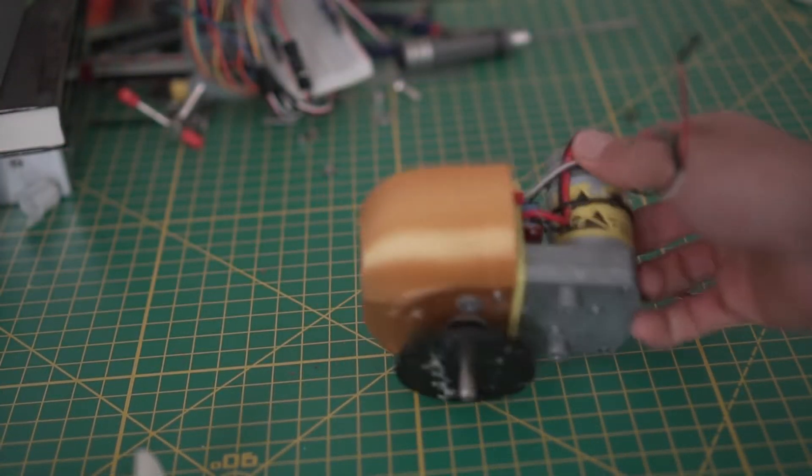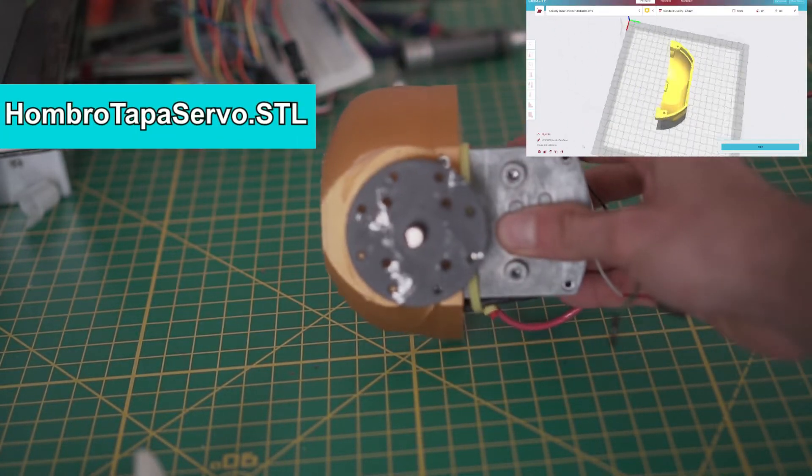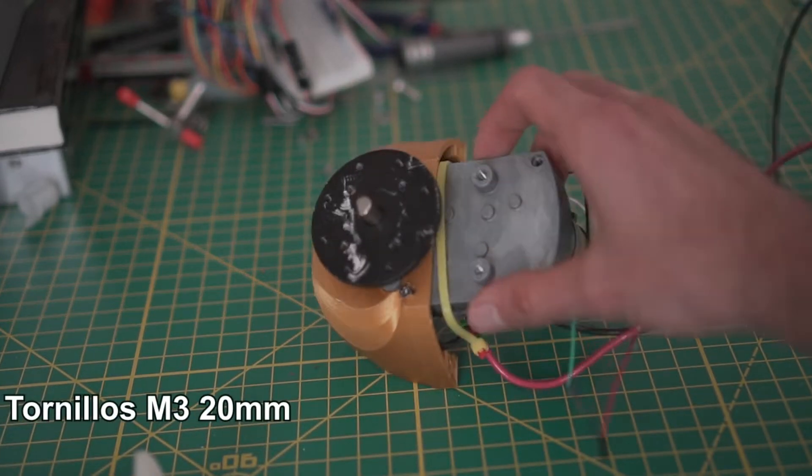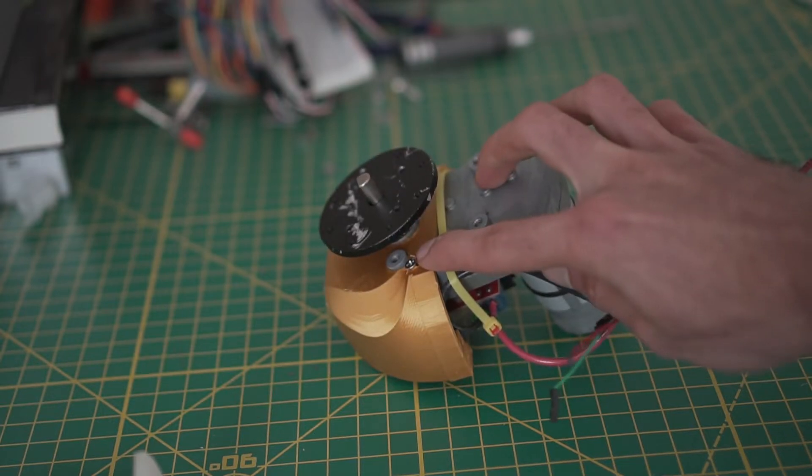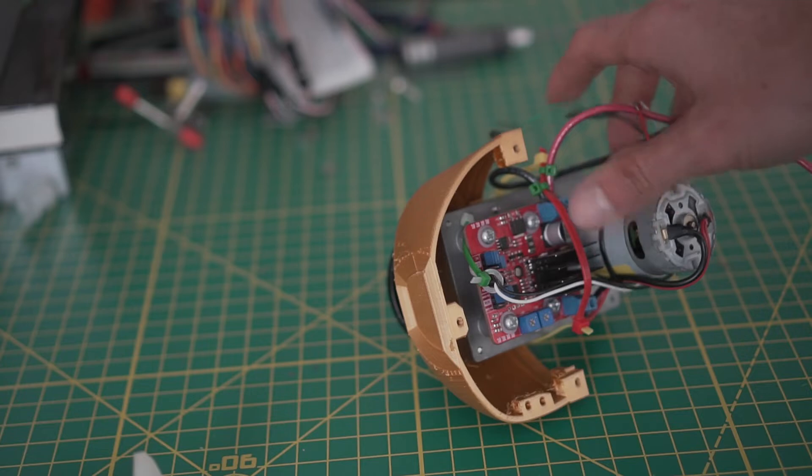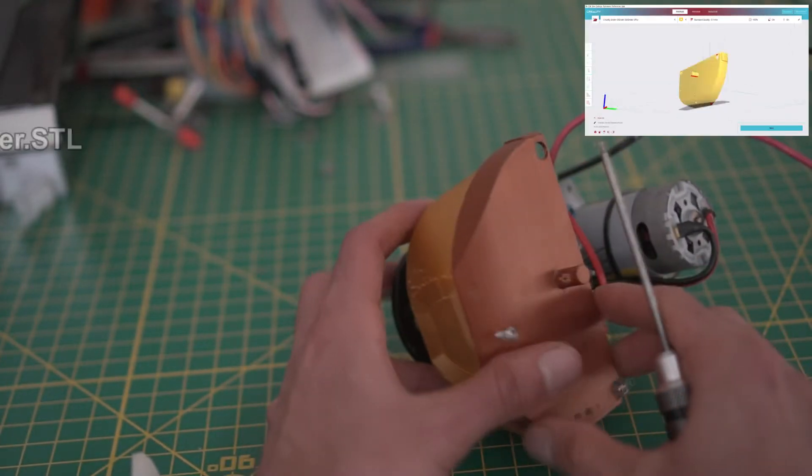One of the requirements for this version is use the servo DH03X and we're going to print this piece. Make sure that the servo is all wired up before printing and assembly.